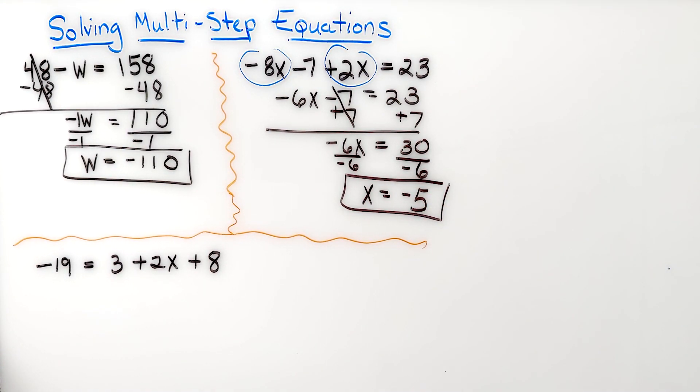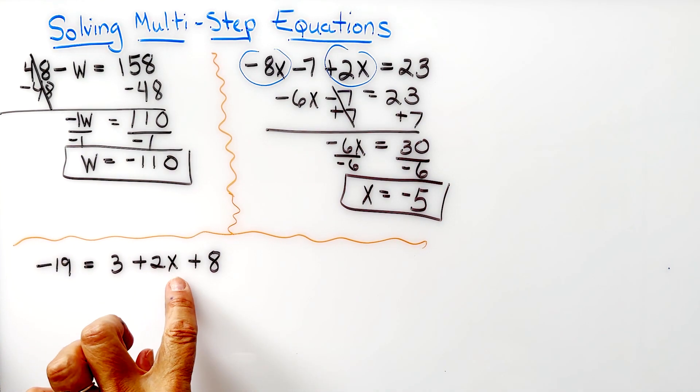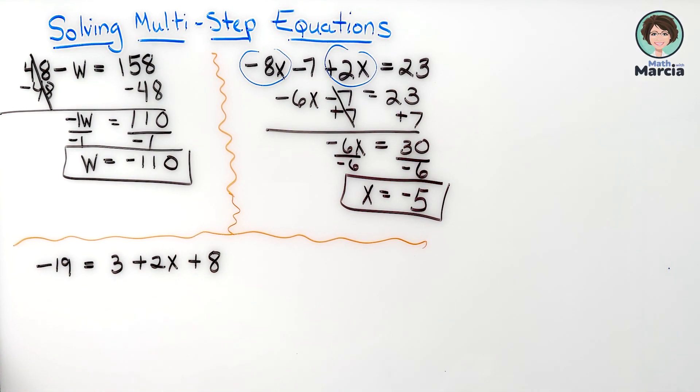Last but not least we have negative 19 equals 3 plus 2x plus 8. Before I do anything, I see that this side of the equation has to be simplified.